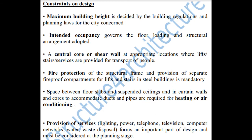Now let us look at the constraints on the design of a tall building. Number 1: maximum building height, which is decided by the building regulations and planning laws of the city in which the building is to be constructed. Number 2: the intended occupancy — how many occupants are to be accommodated — which governs the floor loading and the structural arrangement.